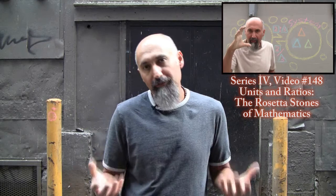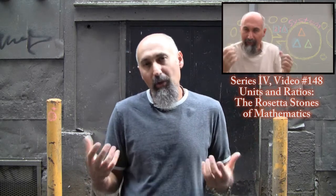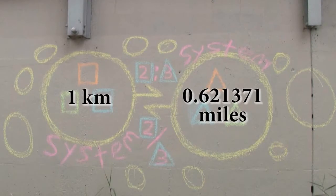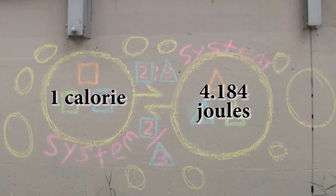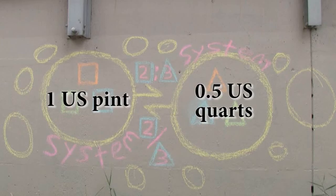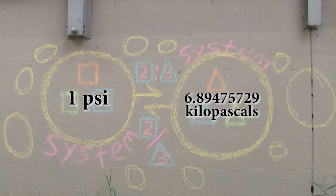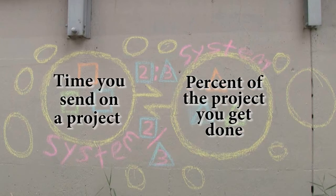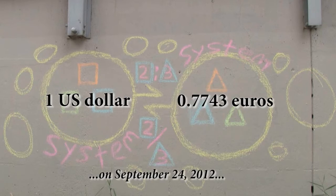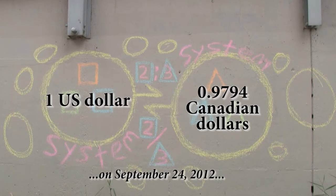In the last video we asked ourselves: what happens when you want to convert from one system to another, from one unit to another? What happens when you want to do unit conversion, irrelevant of what the units are — may they be days to seconds, kilometers to miles, feet to meters, Celsius to Fahrenheit, ounces to grams, calories to joules, gallons to liters, pints to quarts, or maybe how much you get paid for the time you work, or the percent of a project completed.